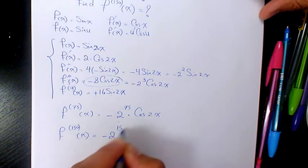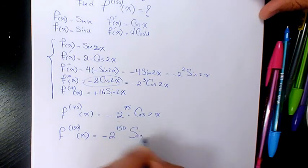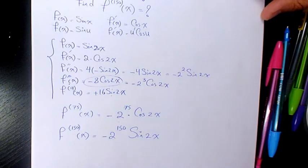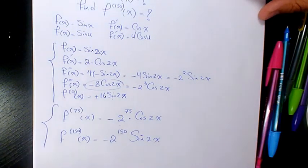So 150th derivative will be negative 2 to the power of 150 sine 2x. So these are going to be the answers to this question.